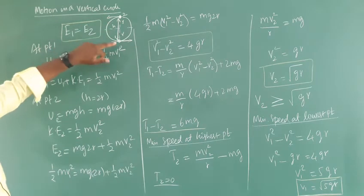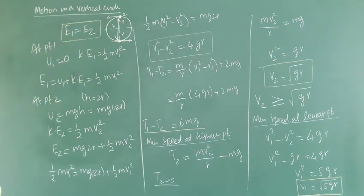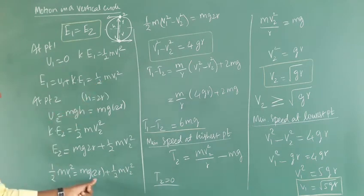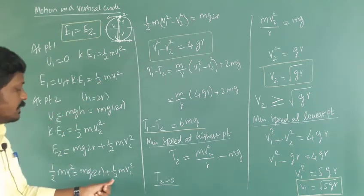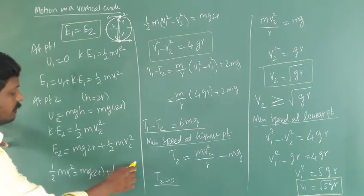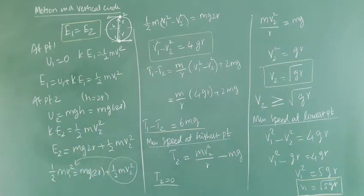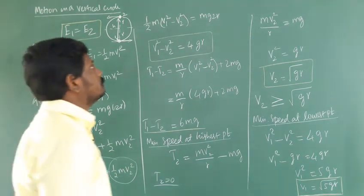Using the law of conservation of energy, the energy at the lowest point and highest point are the same: E1 equals E2. Comparing both sides: half M V1 squared equals M G times 2r plus half M V2 squared. Moving half M V2 squared to the left-hand side, half M is common, so V1 squared minus V2 squared equals M G times 2r, and dividing by M gives V1 squared minus V2 squared equal to 4gr.